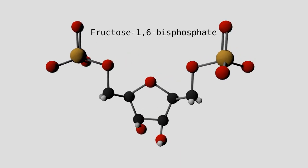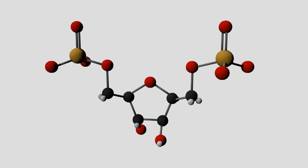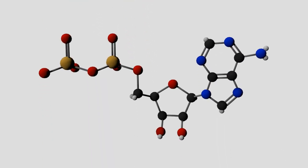We have fructose-1,6-bisphosphate, which is a nice symmetric molecule. This is important because we're going to split it in half later in glycolysis. And then we have ADP, which is just ATP minus one of the phosphate groups.